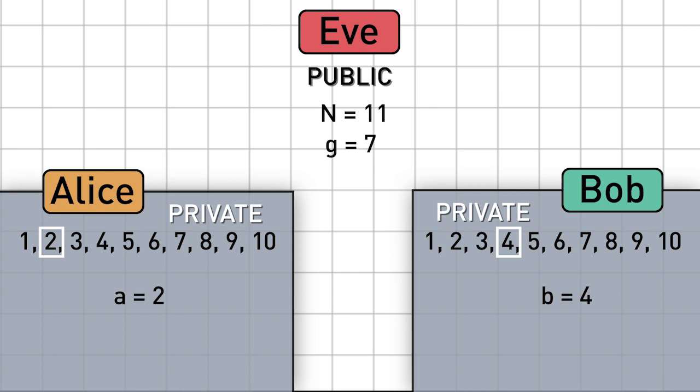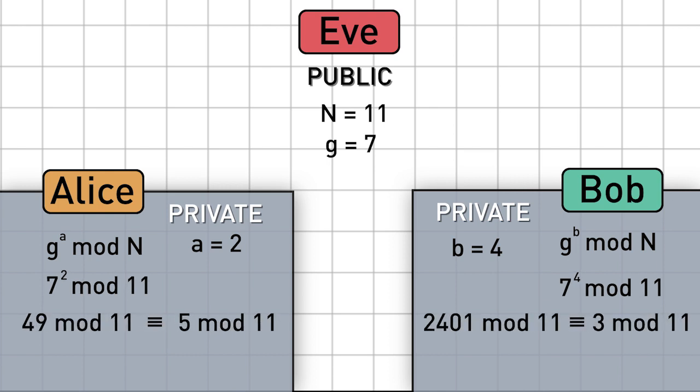Step 3. Alice and Bob each compute g raised to the power of their own secret number mod n. And then they transmit those results to each other with Eve still watching. As you can see, Alice and Bob end up transmitting 5 and 3 respectively.